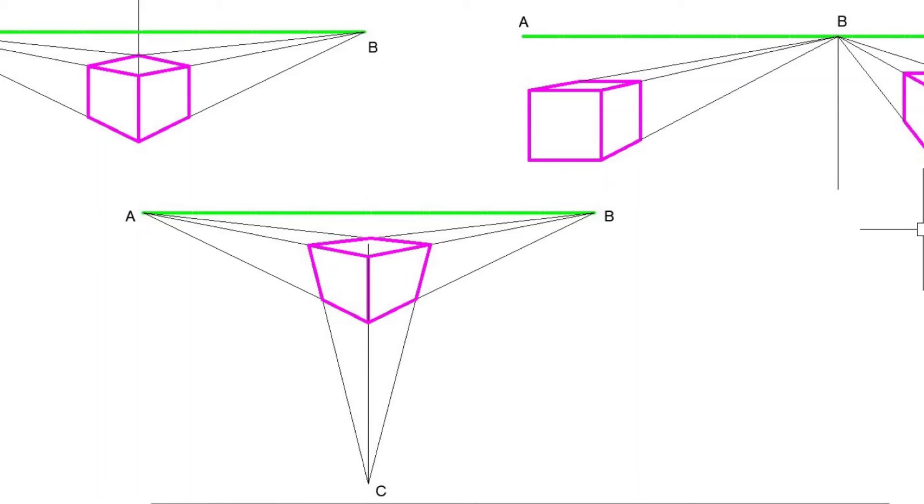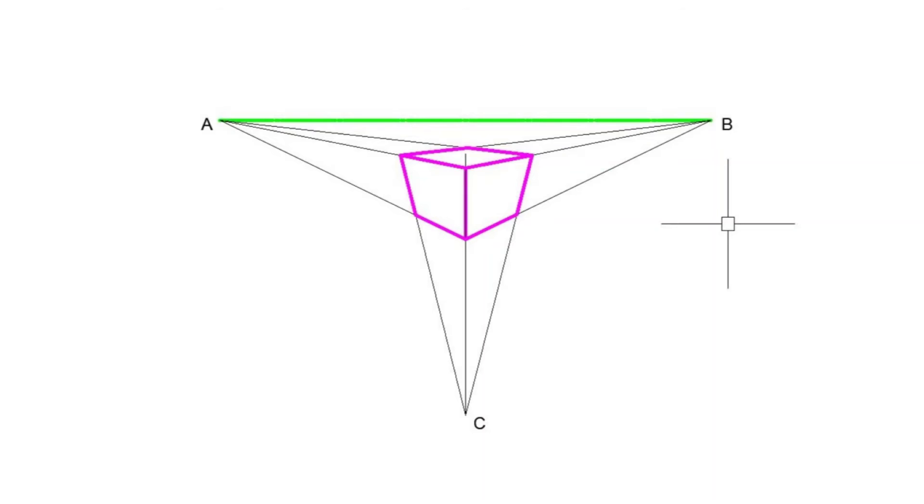And lastly, we have our 3 point perspective. Again, the object is there. We have our horizon line, it's AB. We have our vanishing lines, they are going to A and B. But as you can clearly see, we have a 3rd point, it's point C. So we have 3 vanishing points. We have A, B and C.